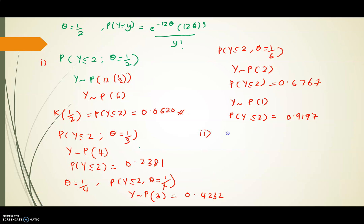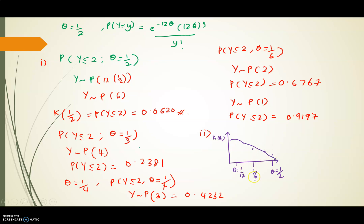If we sketch the graph of K(theta): the smallest value of theta is 1/12, and the largest is theta = 1/2. At theta = 1/12, K = 0.9197; at theta = 1/6, K = 0.6767; at theta = 1/4, K = 0.4232. As theta increases toward 1/2, the power of the test decreases.